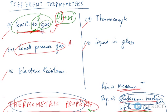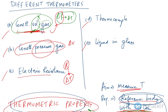Similarly, for the constant pressure gas thermometer, the thermometric property is the change in volume, because pressure is not changing. If a physical property is not changing, it will not indicate a change in temperature. For the electrical resistance thermometer, what changes is the resistance — and this change in resistance indicates something is happening with the temperature.